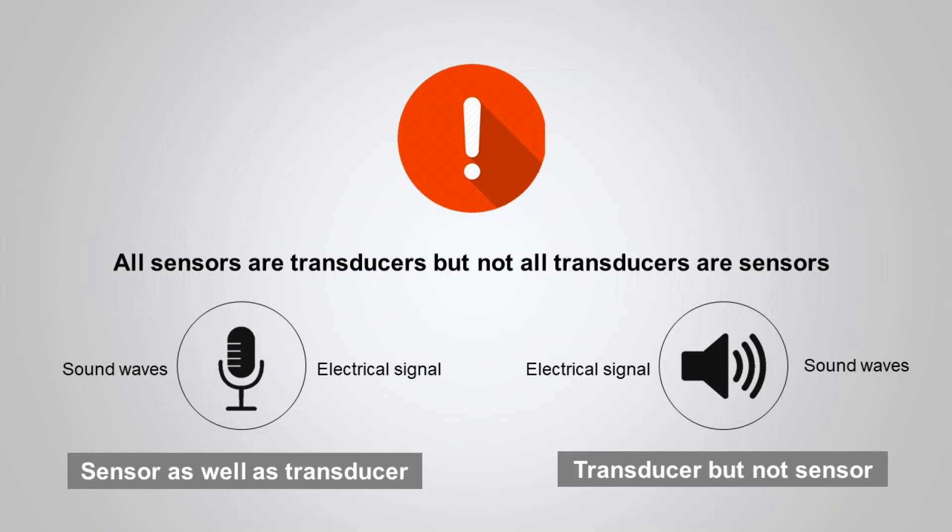The terms sensor and transducer are used interchangeably often; however, there is a slight difference between them. A common statement largely used in engineering states that all sensors are transducers, but not all transducers are sensors. All sensors are transducers as they convert physical quantities into electrical quantities — conversion of one form of energy into another. But not all transducers are sensors, as in the case of actuators, where there is also conversion of one form of energy into another, but they are not capable of sensing — rather, they are used for controlling.